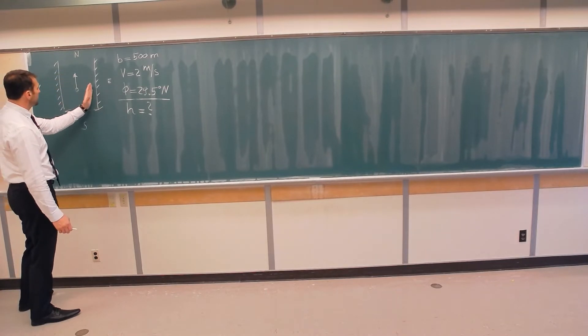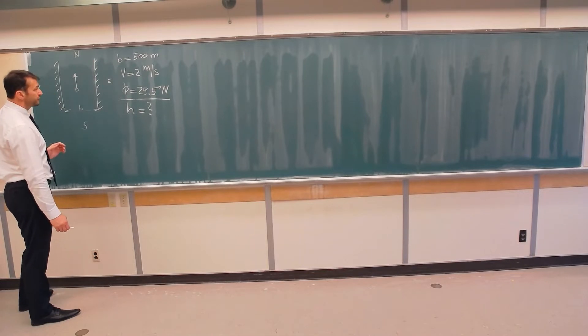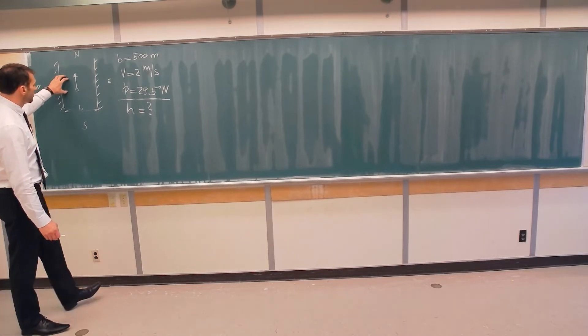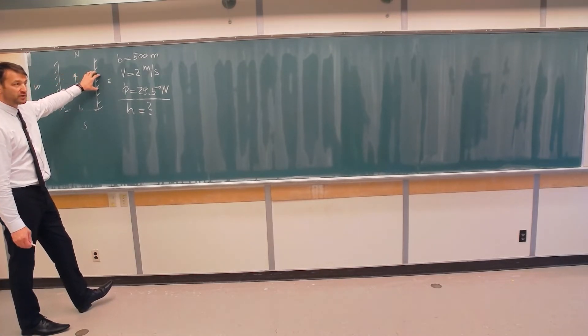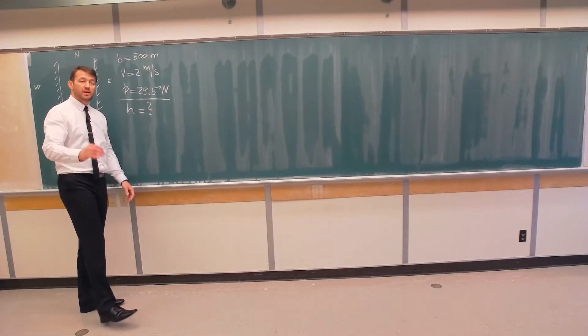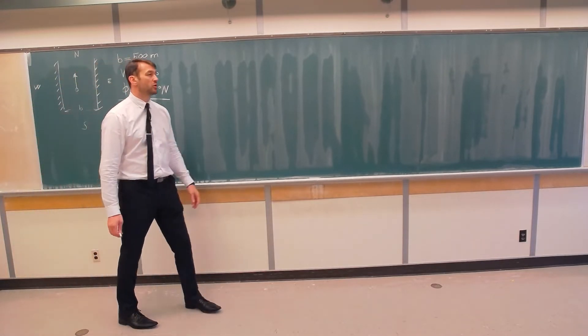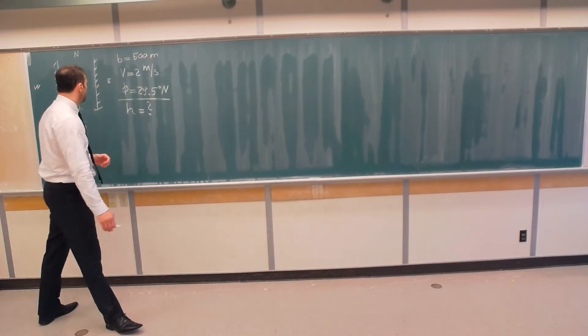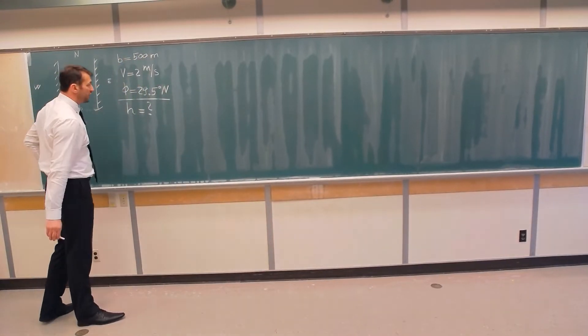Therefore there will be more water on the east side of this river compared to the west side, and the depth over here will be somewhat larger than the depth over here. So if you don't know how to swim, it's better to jump on the west side because water should be shallower. And for how much, don't have your hopes too high, it's just a few millimeters. This effect is very small, but we will calculate it today.